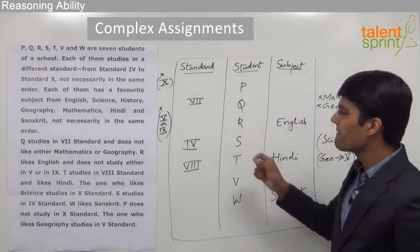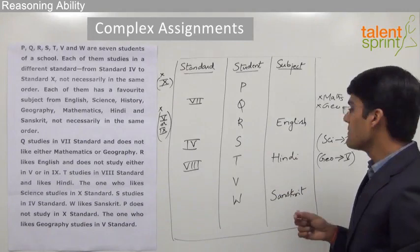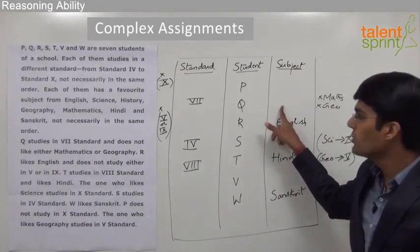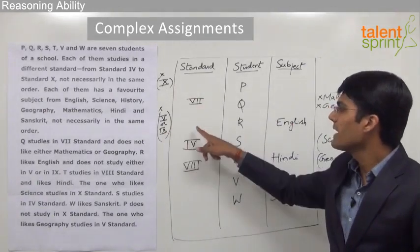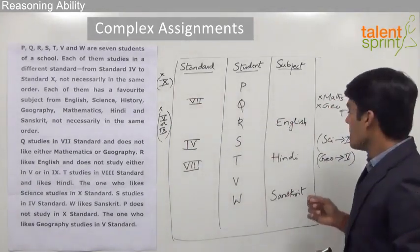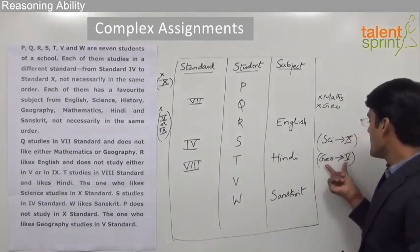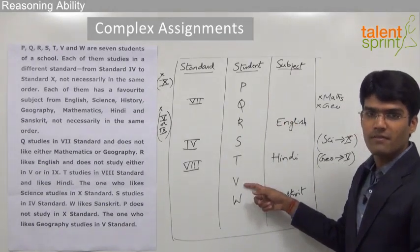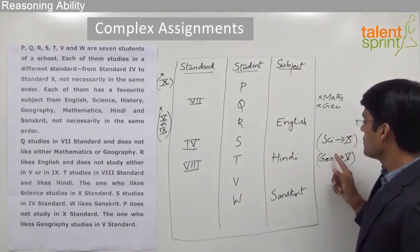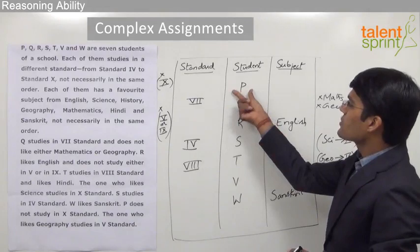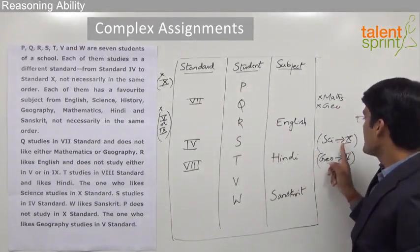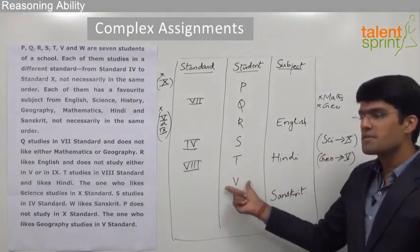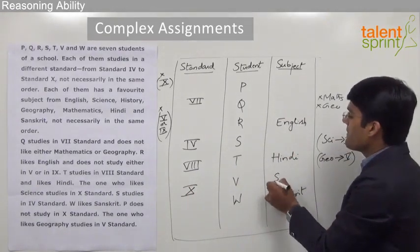So this is the given information. So far we have fixed 3 standards and 3 subjects. The remaining info is: science goes with 10th standard, geography goes with 5th standard, math and geography cannot be Q's favorite subjects, 10th standard cannot be for P, and 5th and 9th standards cannot be for R. The two persons with neither standard nor subject allotted are P and V. Since P does not study in 10th standard, science and 10th standard cannot be for P. So the only possibility is for student V — V studies in 10th standard and his favorite subject is science.